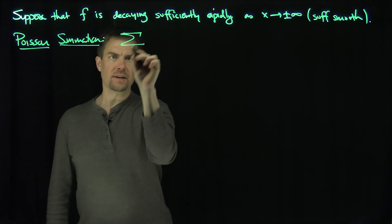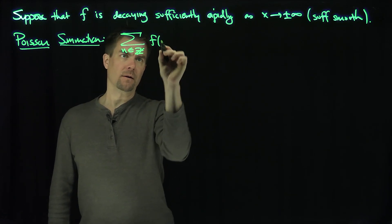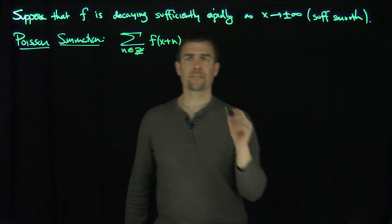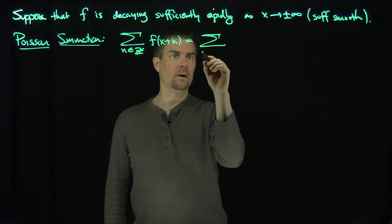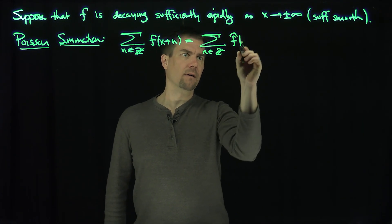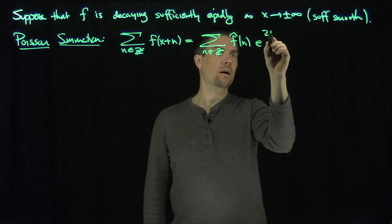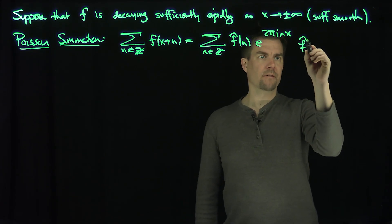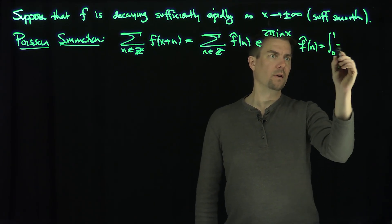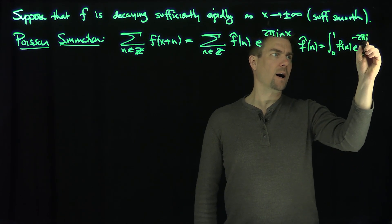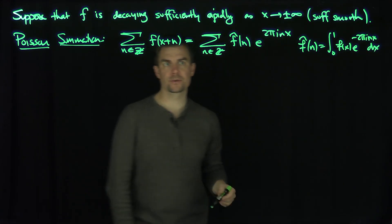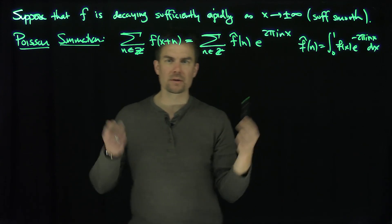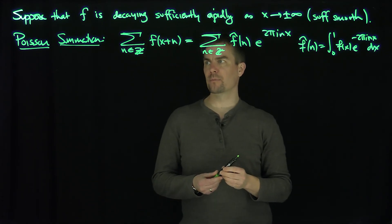It says the sum over n in Z of f of x plus n. This is called the periodization of a function because this function is one-periodic. It's going to be equal to its Fourier series, the sum over n in Z of f-hat of n times e to the 2 pi i n x. Where f-hat of n is defined by the integral from 0 to 1 of f of x times e to the minus 2 pi i n x dx. Those are the Fourier coefficients, relative to 2 pi. This is a clean version of Poisson summation.